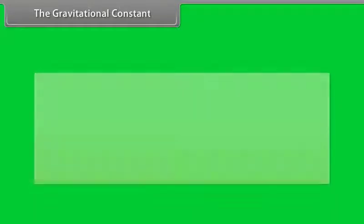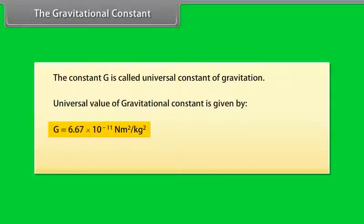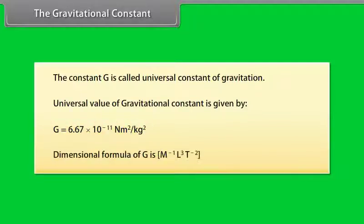The gravitational constant G is called the universal constant of gravitation. The universal value of the gravitational constant is G = 6.67 × 10⁻¹¹ N·m²/kg². The dimensional formula of G is M⁻¹L³T⁻².